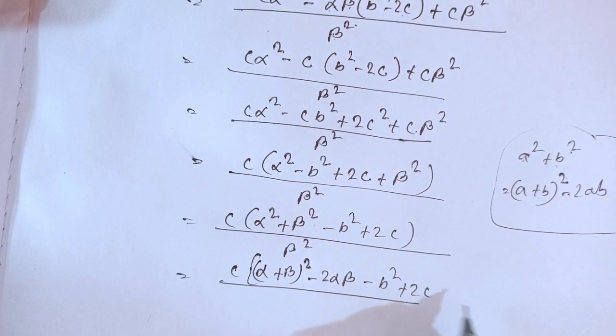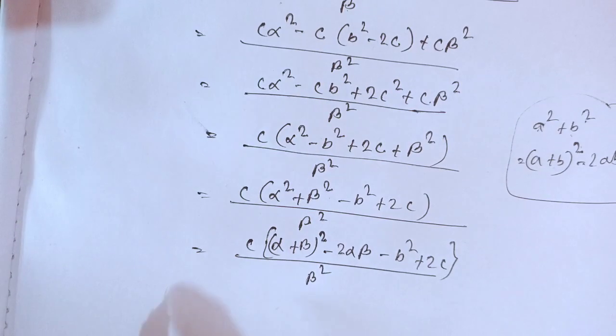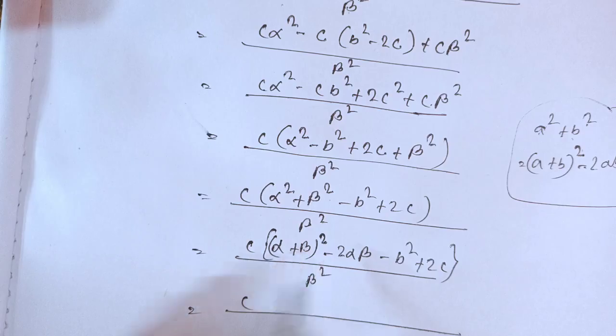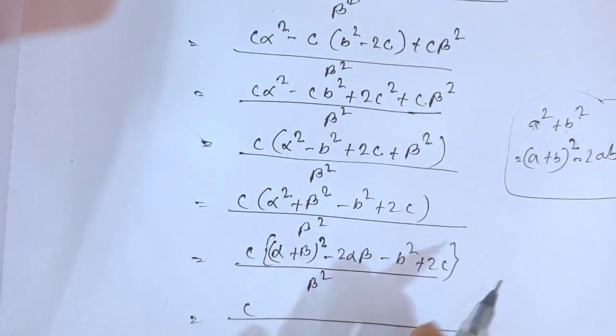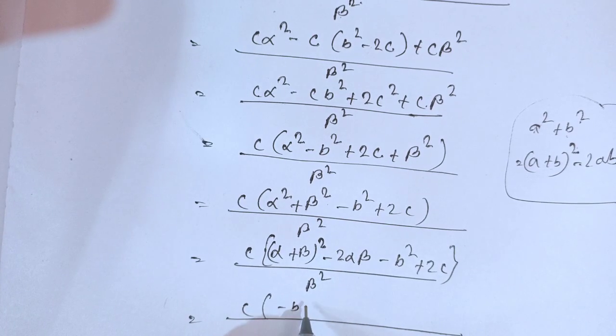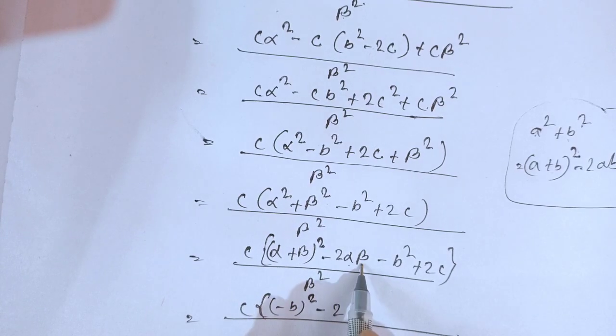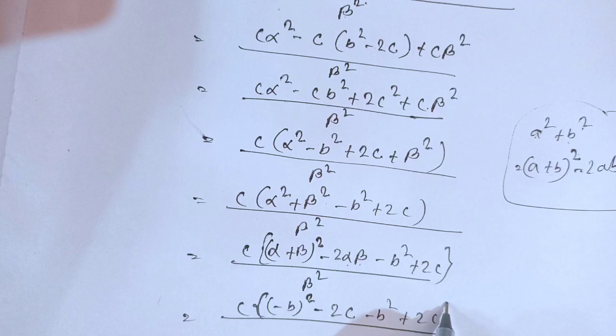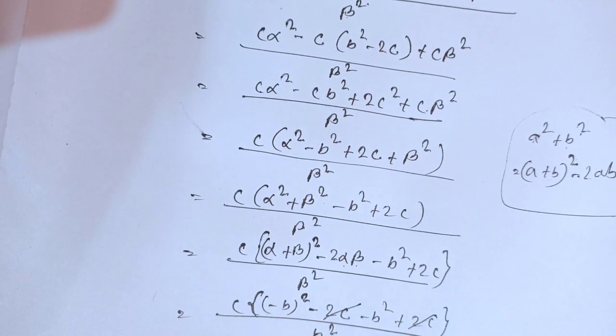We know α + β = -b, so this becomes [c(-b)²]/β². This equals cb²/β². Since αβ = c, we have β² from there. Substituting: this becomes [cb² - b²αβ + 2c]/β².